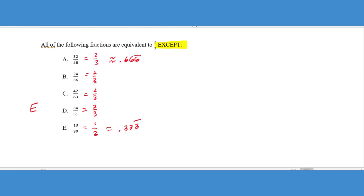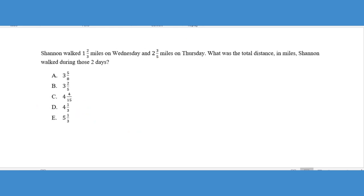Moving on to the next one. So here we get to a very common problem, a mixed number question that tends to show up in the first five questions on the ACT math. It says Shannon walked one and two thirds miles on Wednesday and two and three fifths miles on Thursday. What was the total distance in miles Shannon walked during those two days?